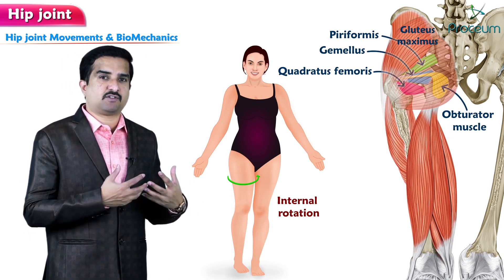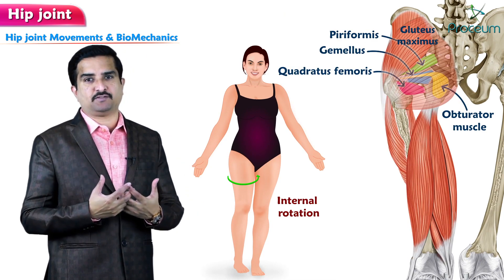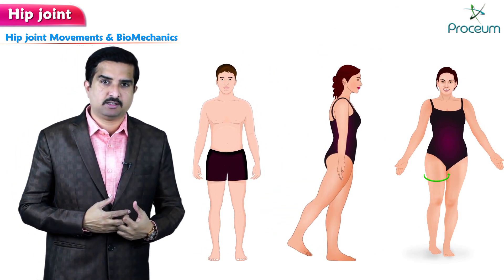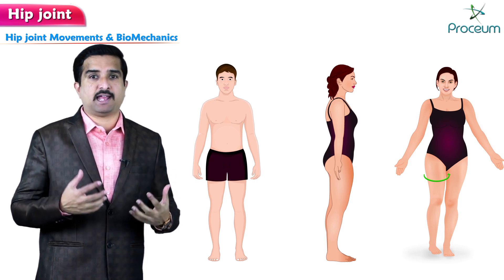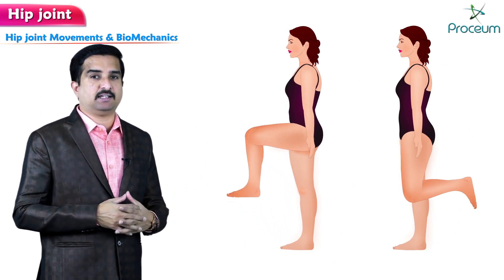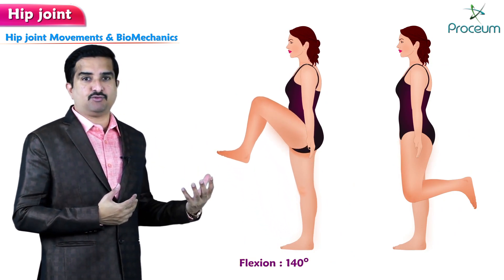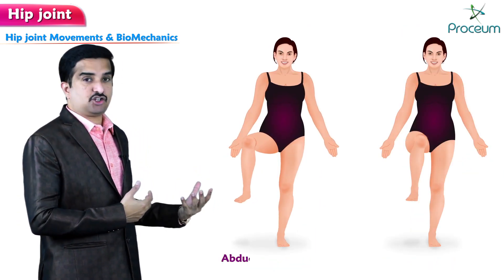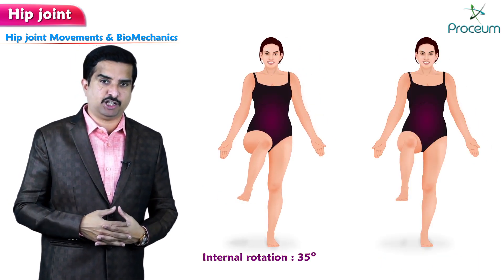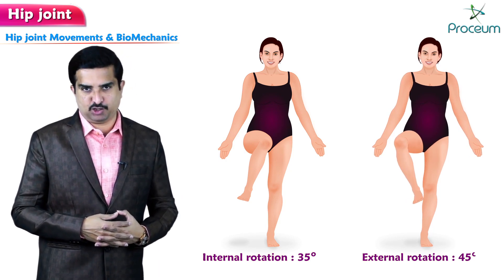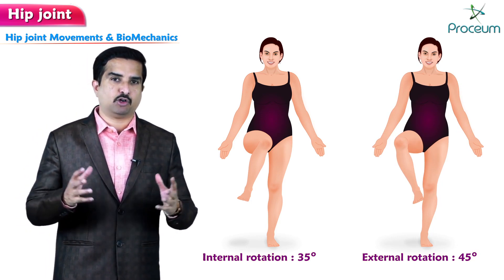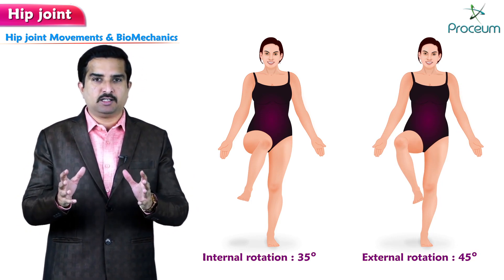The range of movements of the hip joint, precisely marked in degrees when the knee is flexed at 90 degrees: flexion 140 degrees, extension 15 degrees, abduction 40 degrees, adduction 25 degrees, internal rotation 35 degrees, and external rotation 45 degrees.